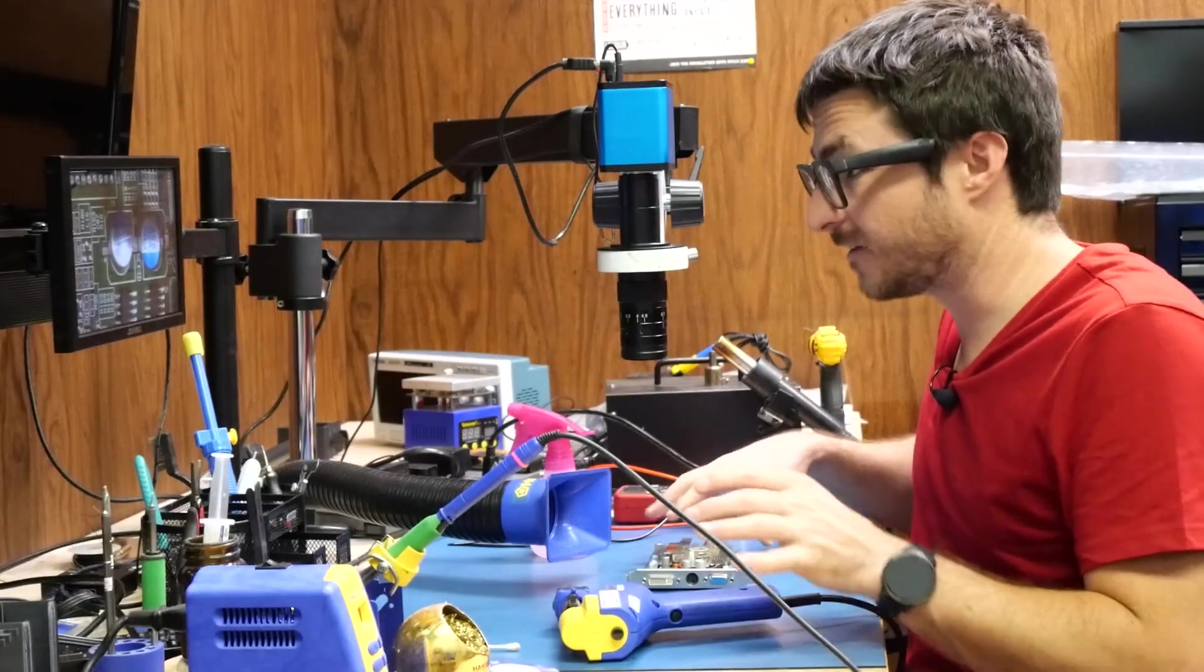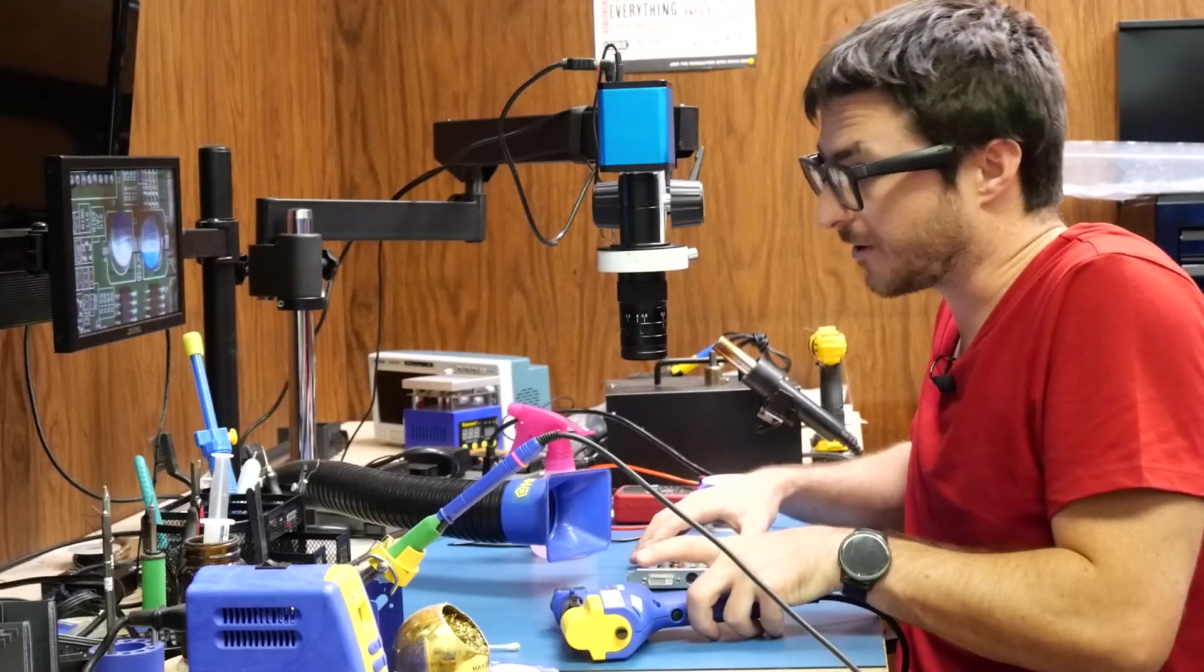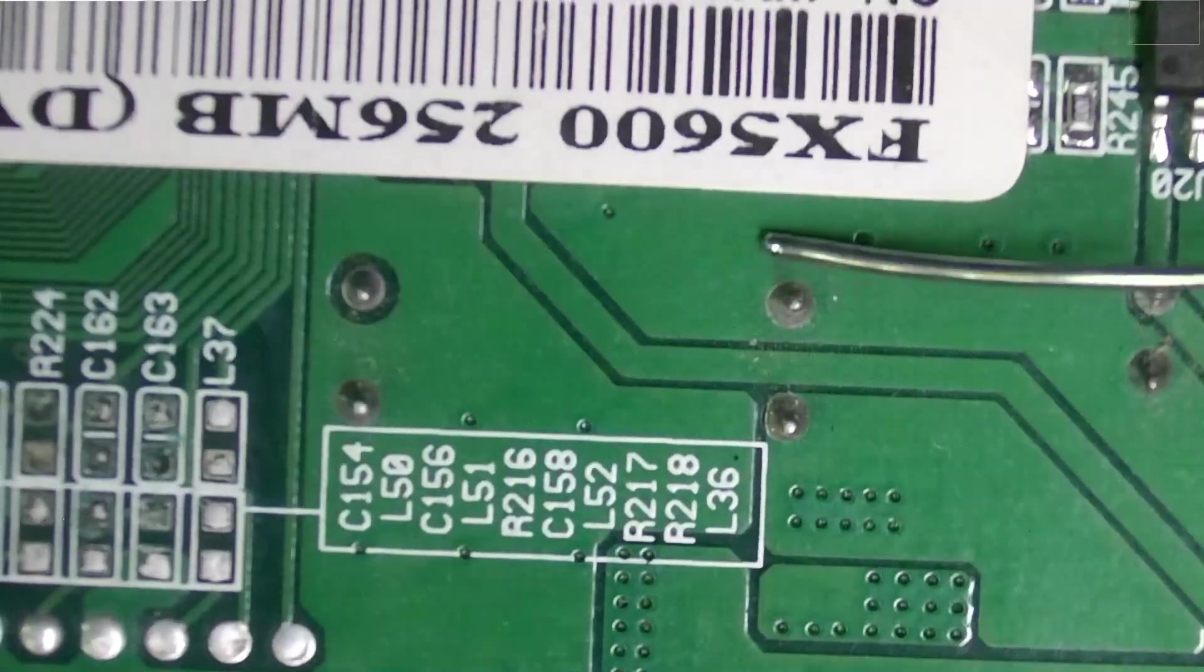All right, so to do things a little differently, our next two over here, what we're going to do is use the desolder gun. Same as before, we'll go ahead and add some new solder first.